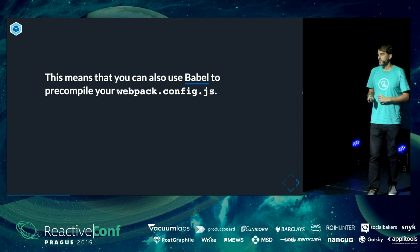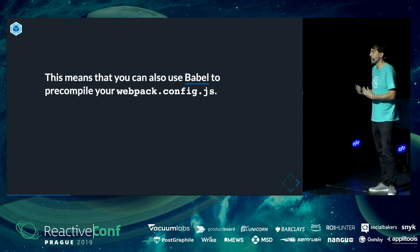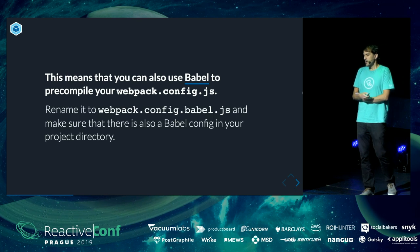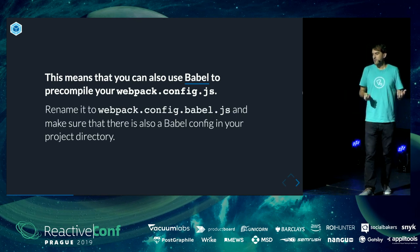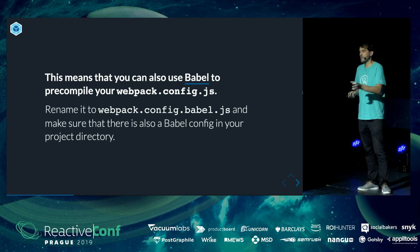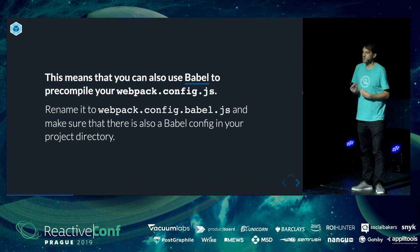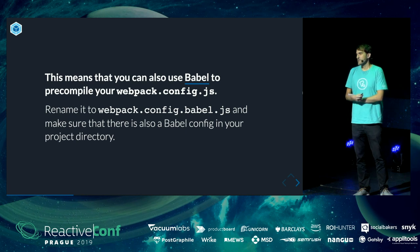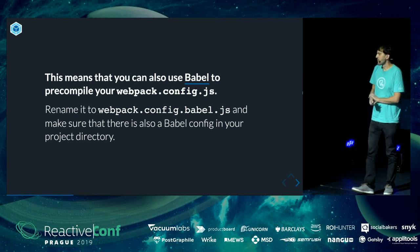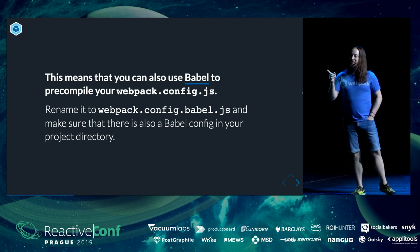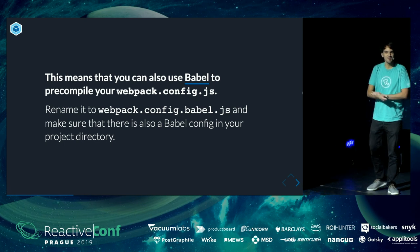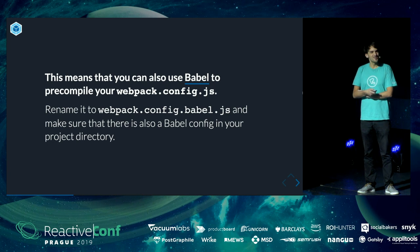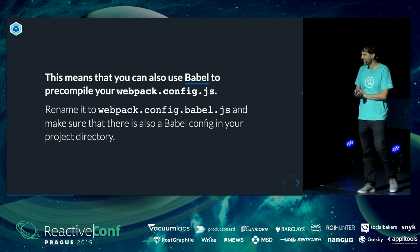This is also the reason why you can use Babel to transpile your Webpack config. If you rename your Webpack config to webpack.config.babel.js and make sure a Babel config is in your project directory, it will compile your Webpack config. You could also do it with CoffeeScript if you want to — but don't do that, please.